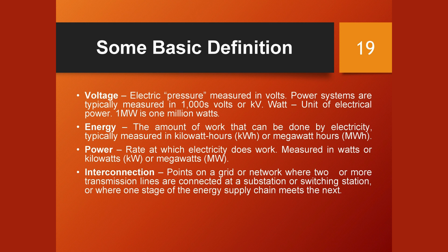Voltage is electric pressure measured in volts; power systems are typically measured in thousands of volts (kV). A watt is the unit of electrical power; one megawatt equals one million watts. Energy is the amount of work that can be done by electricity, typically measured in kilowatt-hours (kWh) or megawatt-hours (MWh). Power is the rate at which electricity does work, measured in watts, kilowatts (kW), or megawatts (MW). Interconnection refers to points on a grid where two or more transmission lines are connected at a substation or switching station, or where one stage of the energy supply chain meets the next.